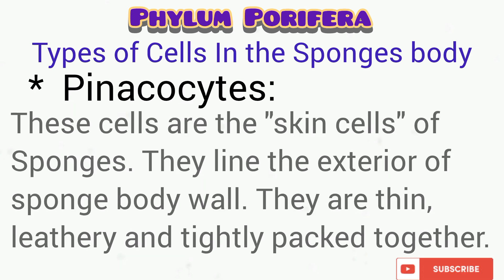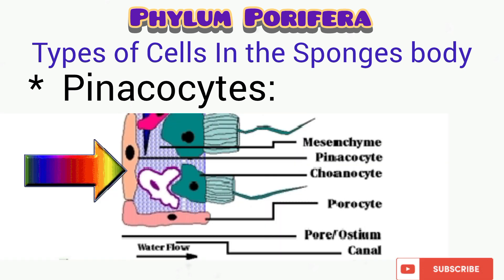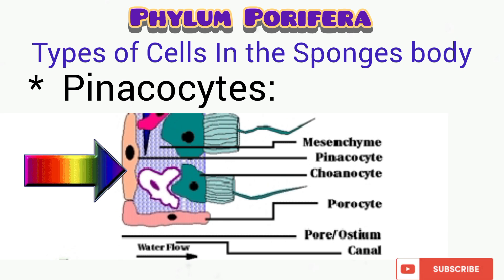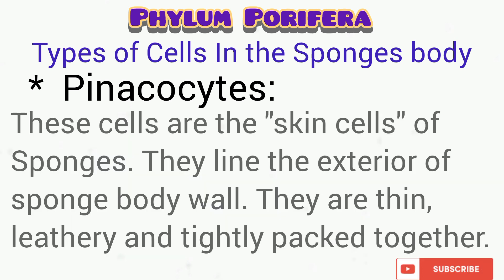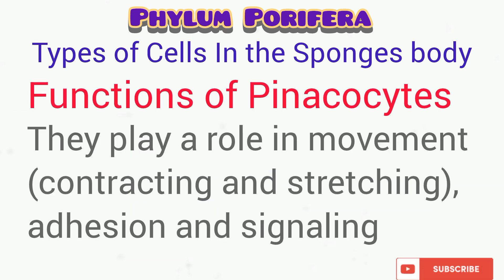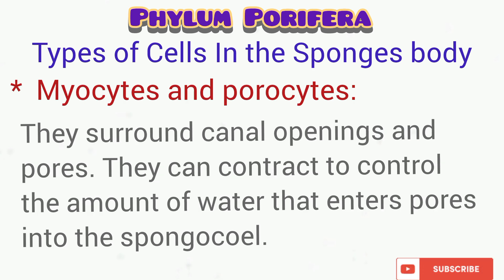The next type of cell is the pinacocyte, which are actually regarded as the skin cells of the sponges. They actually line the exterior of the sponge's body, as you can see from the diagram. They are thin, leathery, and tightly packed together. They actually play a role in movement and also in signaling, as well as adhesion — that is, attachment of the sponge's body to a surface.